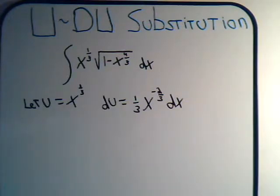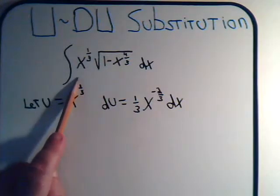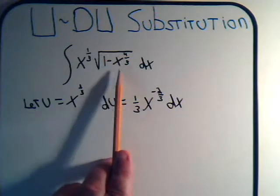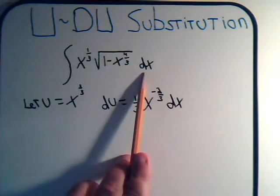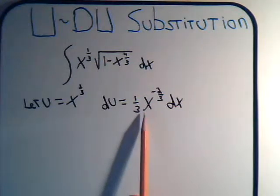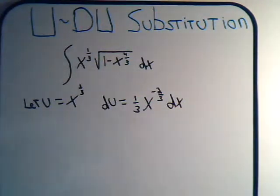And clearly this would not be a wise choice because we would call that u, but du is not 1 minus x to the 4/3 to the 1/2 power dx. du comes out to be equal to this, so that's not going to work out for us at all.